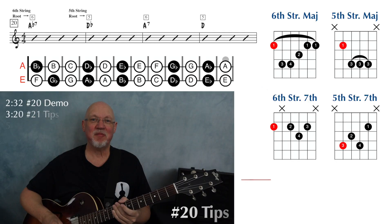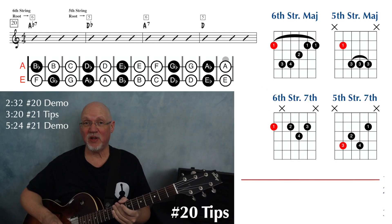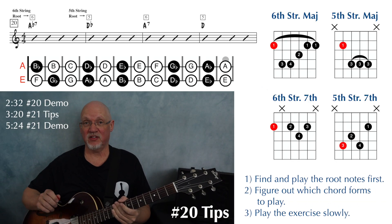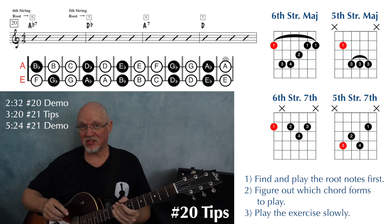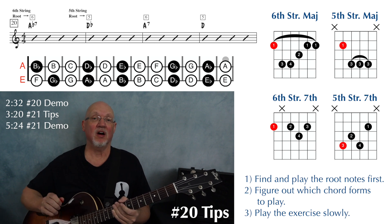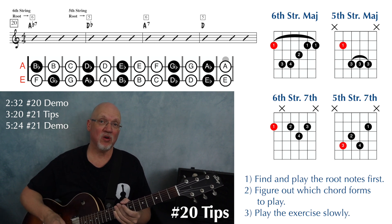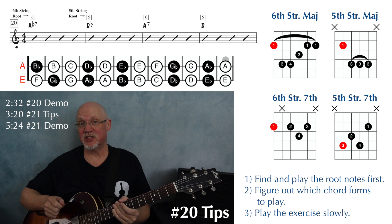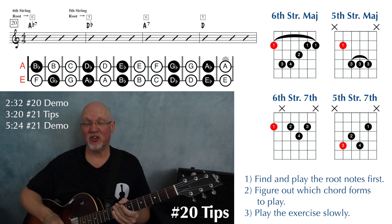At the top of page 16, we have Exercise 20. This is all dominant seven and major chords. Our dominant seven chords are going to have roots on the sixth string, and our major chords will have roots on the fifth string.